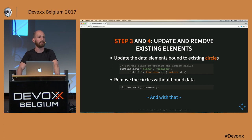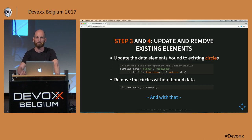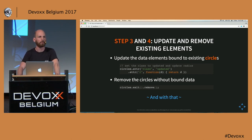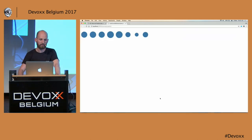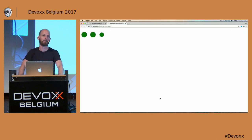The last step is removing elements for which we don't have any data. Say we have nine elements on screen and we generate data with just two elements — the rest we can remove. This is done through the exit function: we call exit on the selection and then simply remove the elements, or alternatively change their opacity to hide them. And with that, you have the example I showed, which starts removing circles, adding circles, and most importantly reuses existing circles on screen.